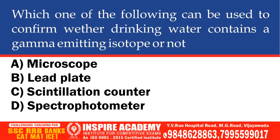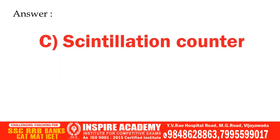Which one of the following can be used to confirm whether drinking water contains a gamma-emitting isotope or not? Options: microscope, lead plate, scintillation counter, or spectrophotometer. And the correct answer is scintillation counter.